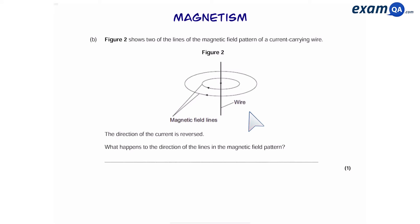Figure 2 shows the lines of the magnetic field pattern of a current carrying wire. So in the middle we have a wire, there's a current flowing through it, and those circles are magnetic field lines. If the direction of the current is reversed in the wire, what happens to the direction of the magnetic field? So if the current is reversed, then the magnetic field will also turn in the opposite direction.